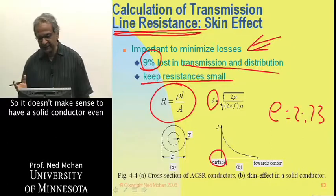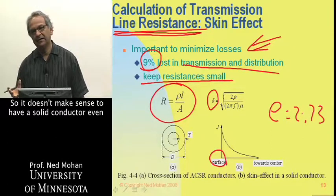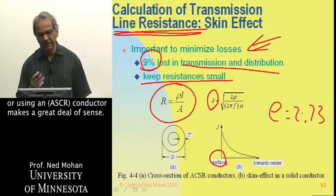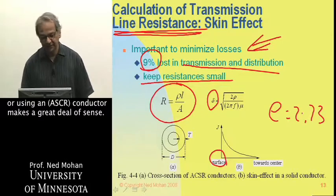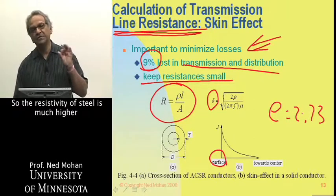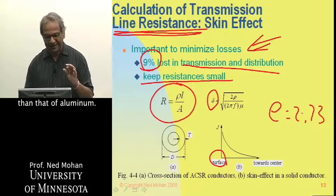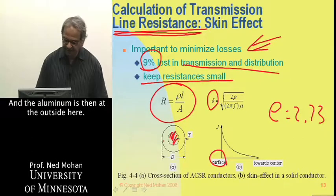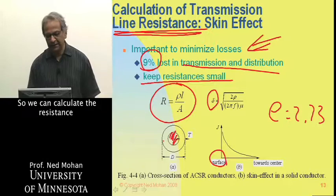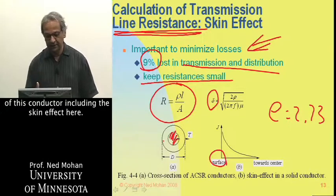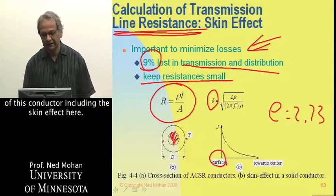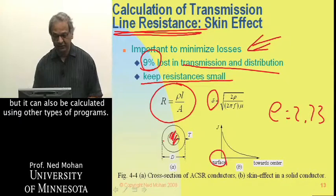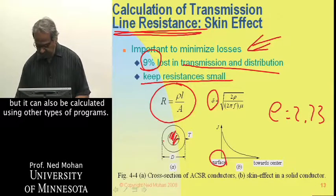It doesn't make sense to have a solid conductor even at 60 Hz due to skin effect, so using an ACSR conductor makes great sense. Since the resistivity of steel is much higher than that of aluminum, we can consider the steel core to be hollow for current-flow purposes, with aluminum on the outside. The resistance of this conductor, including skin effect, is given in tables and can also be calculated using other programs.